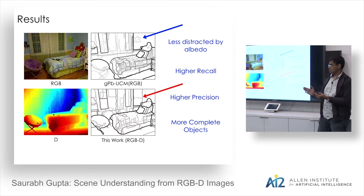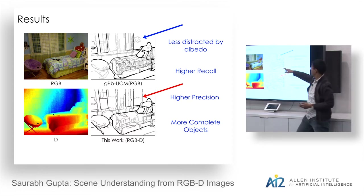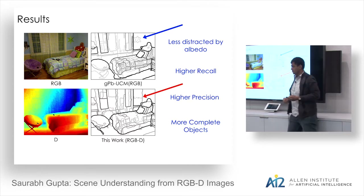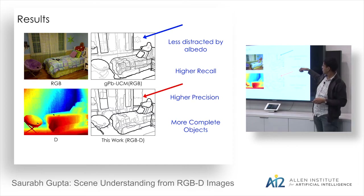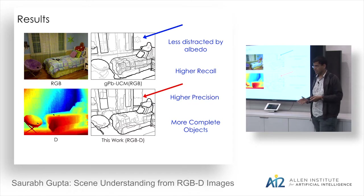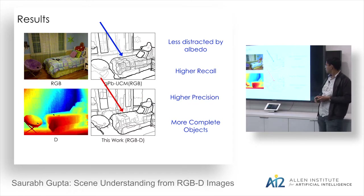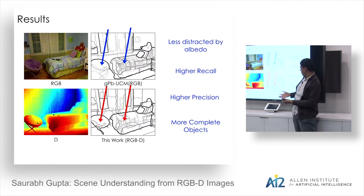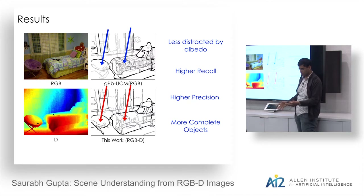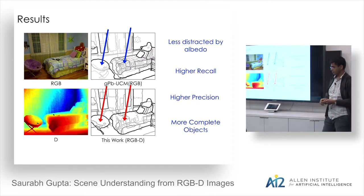You also get higher recall: faint boundaries at wall intersections that are important for scene understanding are now detected. You'd miss these using only color, but the depth camera captures them. You get higher precision — important boundaries are stronger — and more complete objects: thresholding the image groups all bed pixels into a single blob, which is useful for downstream processing.